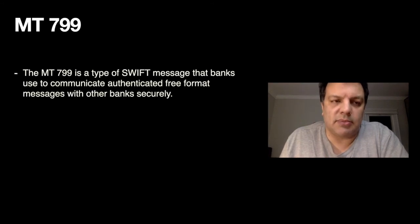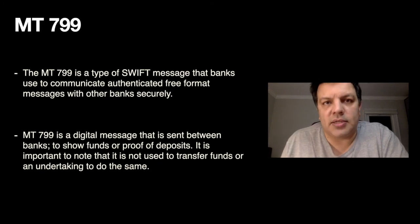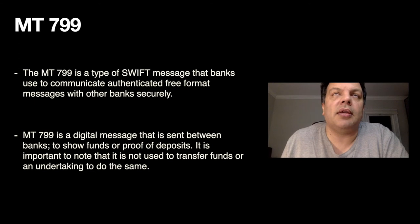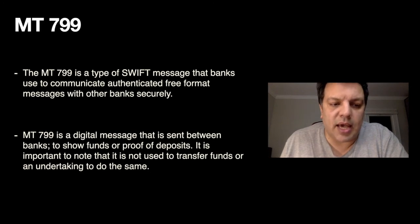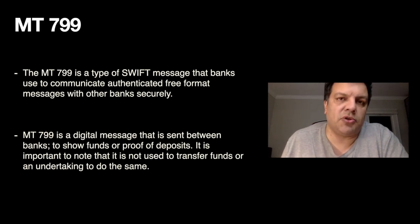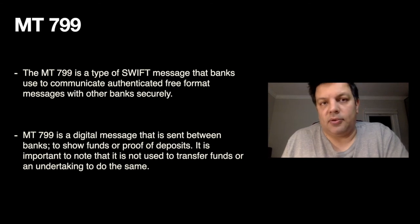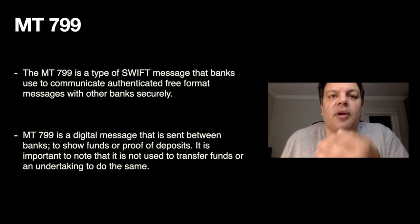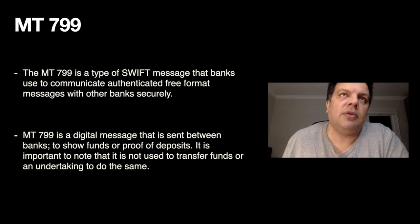The third and last of the top three most popular messaging systems is MT-799. It's a SWIFT message system that banks use to communicate with each other. The primary purpose is to show proof of funds. MT-799 is not a vehicle that shows you're sending or receiving money — it shows you have the proof of funds, as a bank-to-bank communication. For example, if I want to withdraw $10 billion from your bank into mine, my bank wants to confirm proof of funds first, so your bank will send an MT-799 to show that the funds exist.